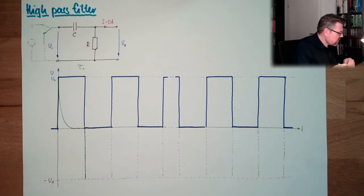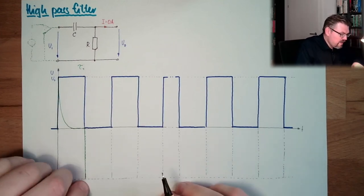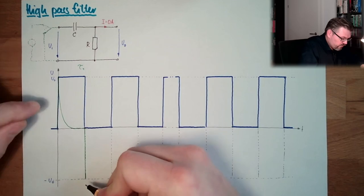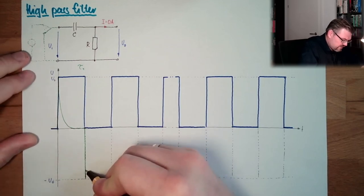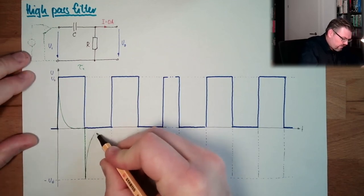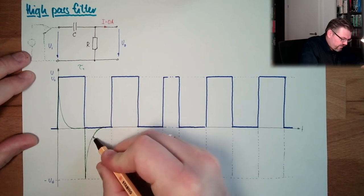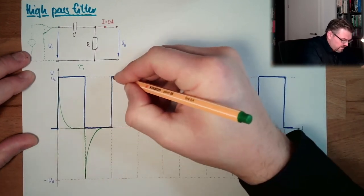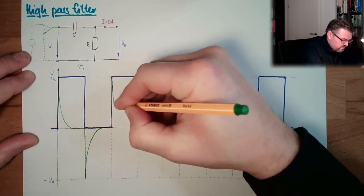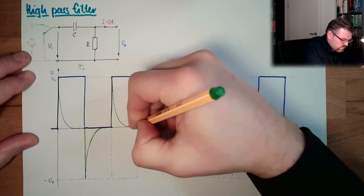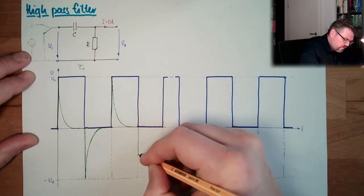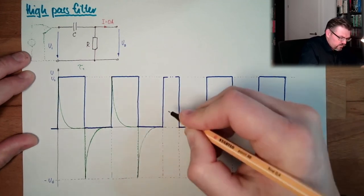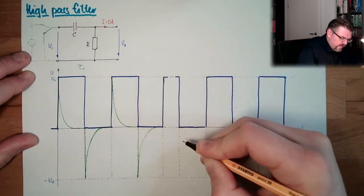So we are going down. Then C is discharged by R and we go back up — it looks exactly like this peak but the other way around. We come back to zero, and then the same game repeats over and over. Since this is how it looks from the beginning, there is no real difference later either.